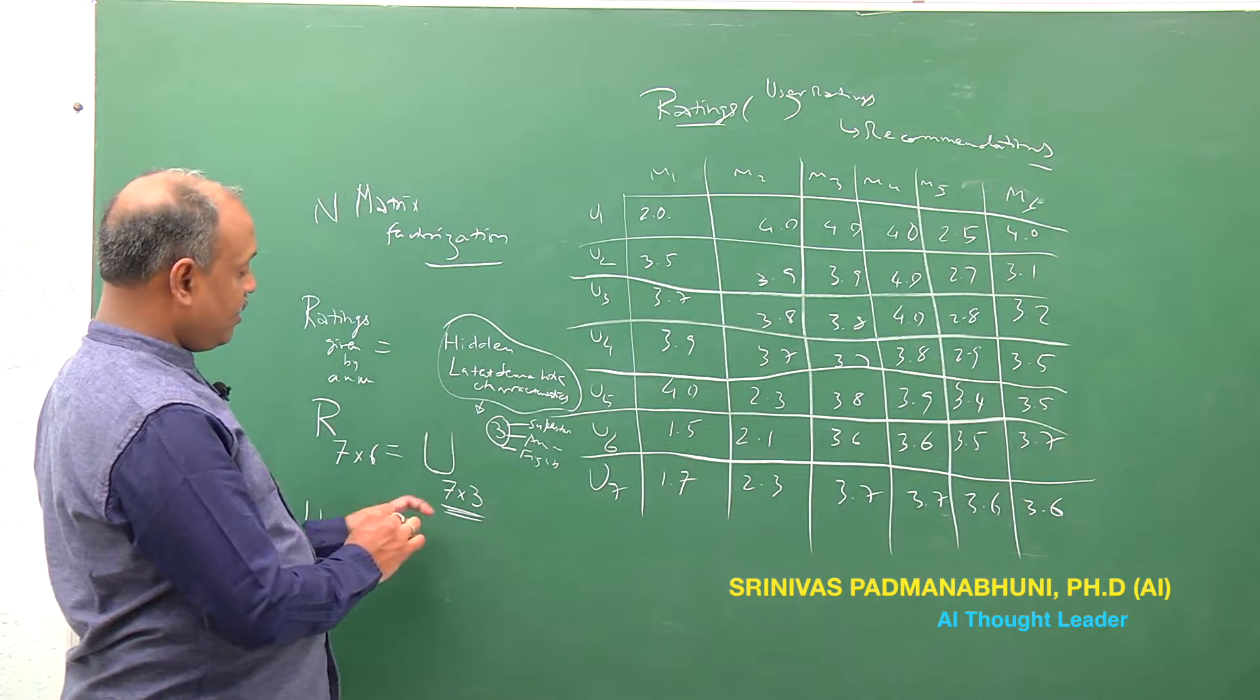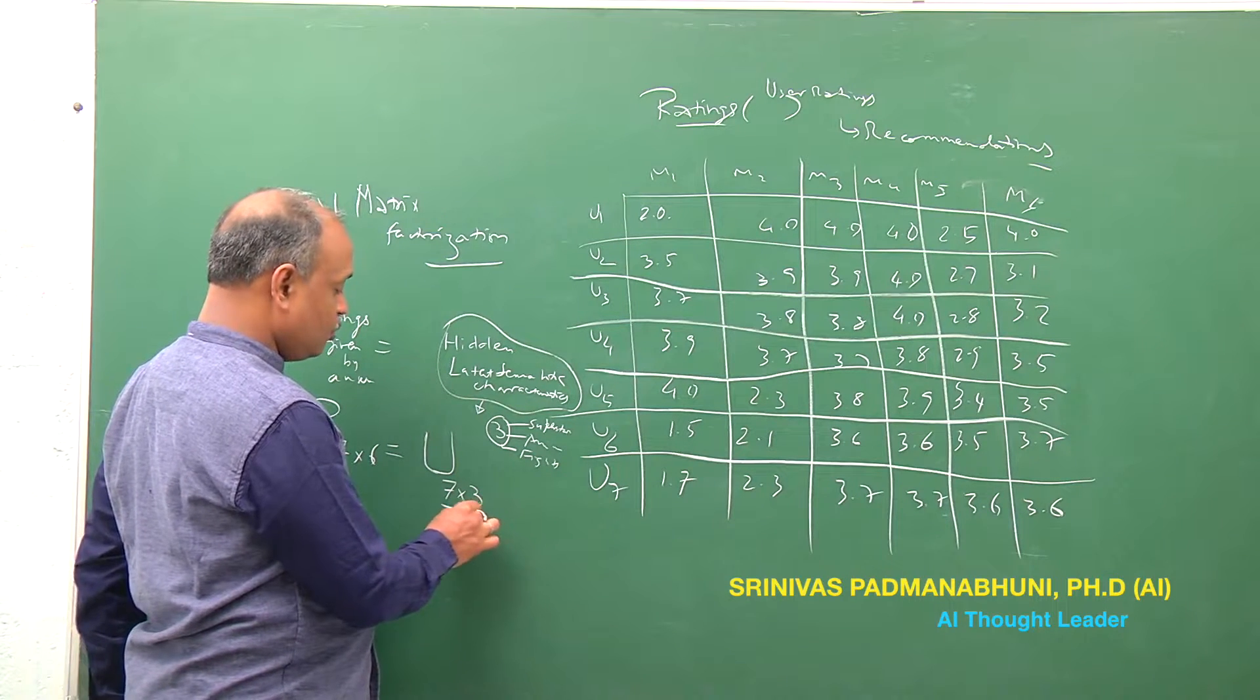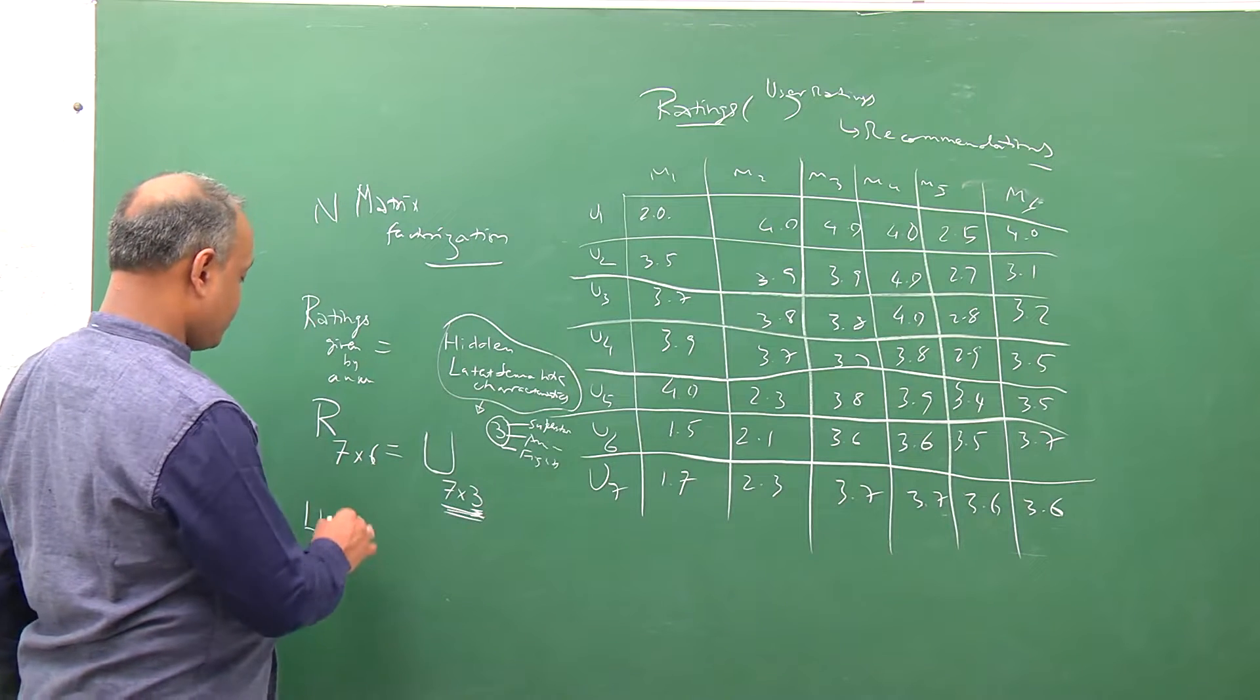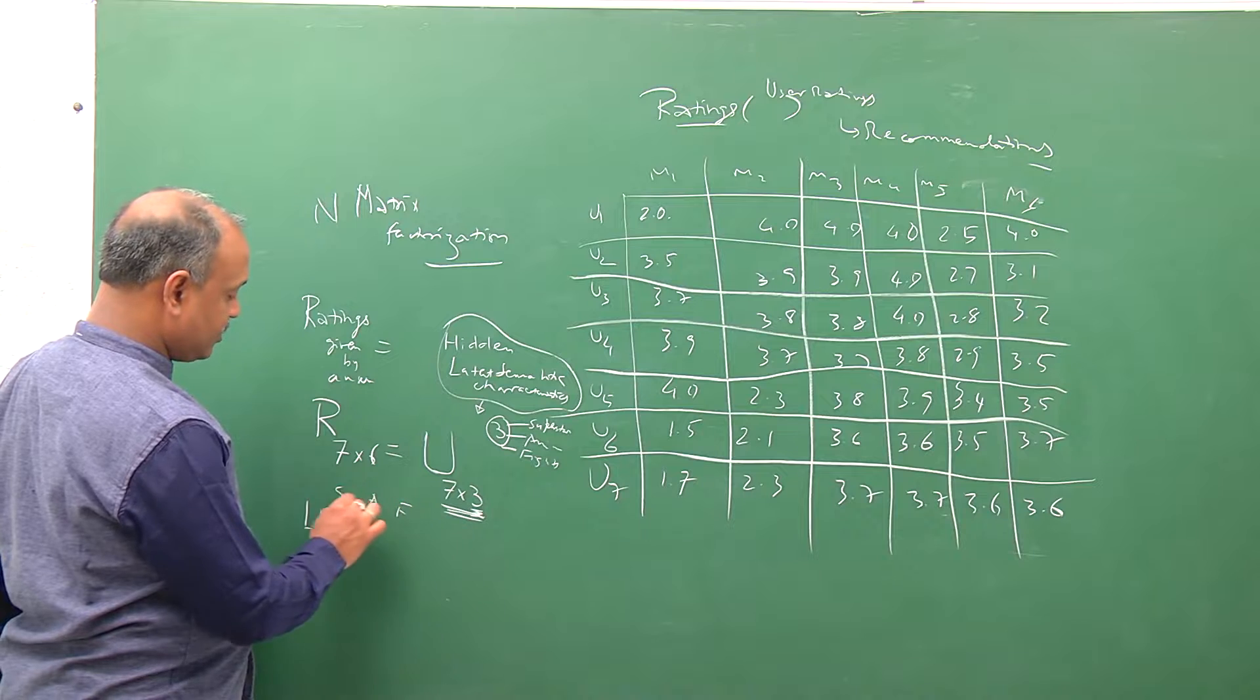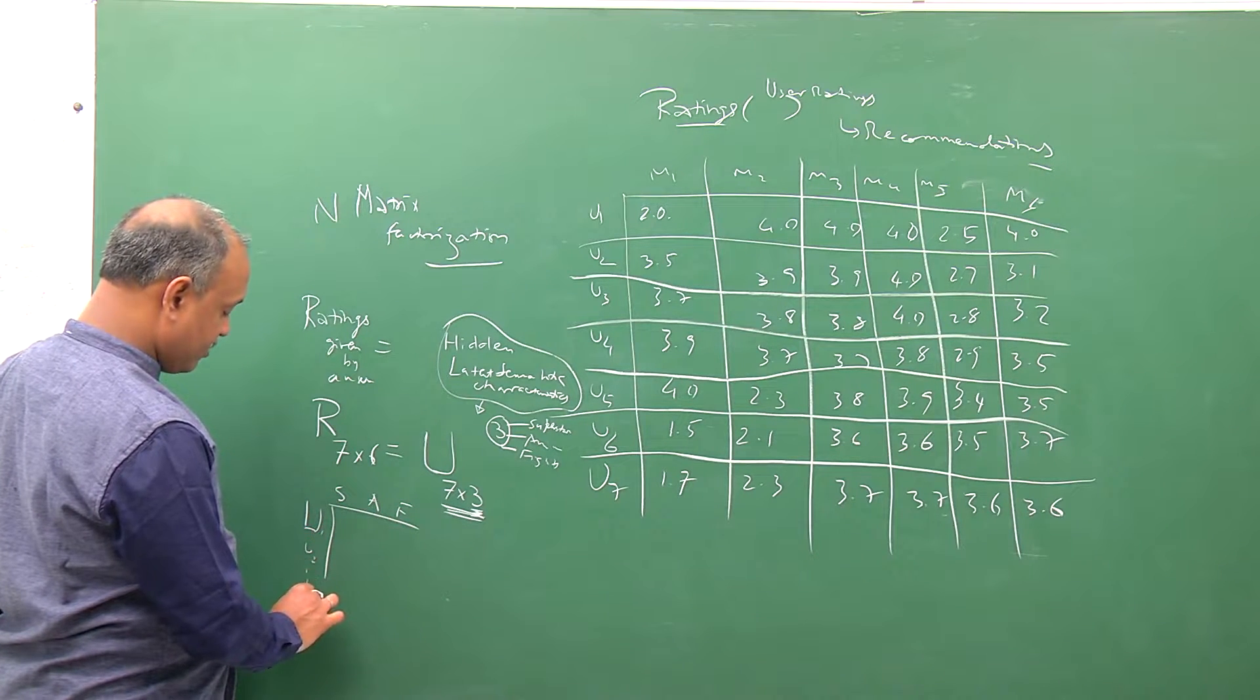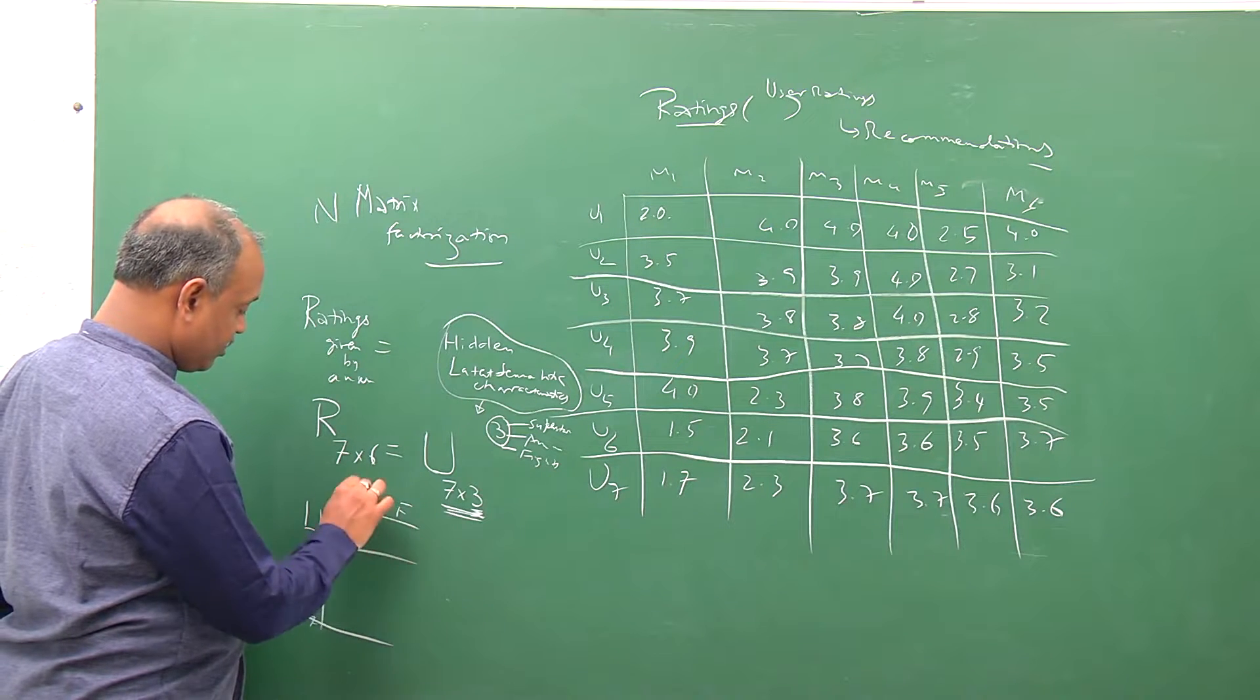For example, you may say that I have superstar, animation, or fights - these are the three characteristics. Each of the users have a matrix with seven rows and three columns - I may like this 1.5 times, 2 times, 1 time.